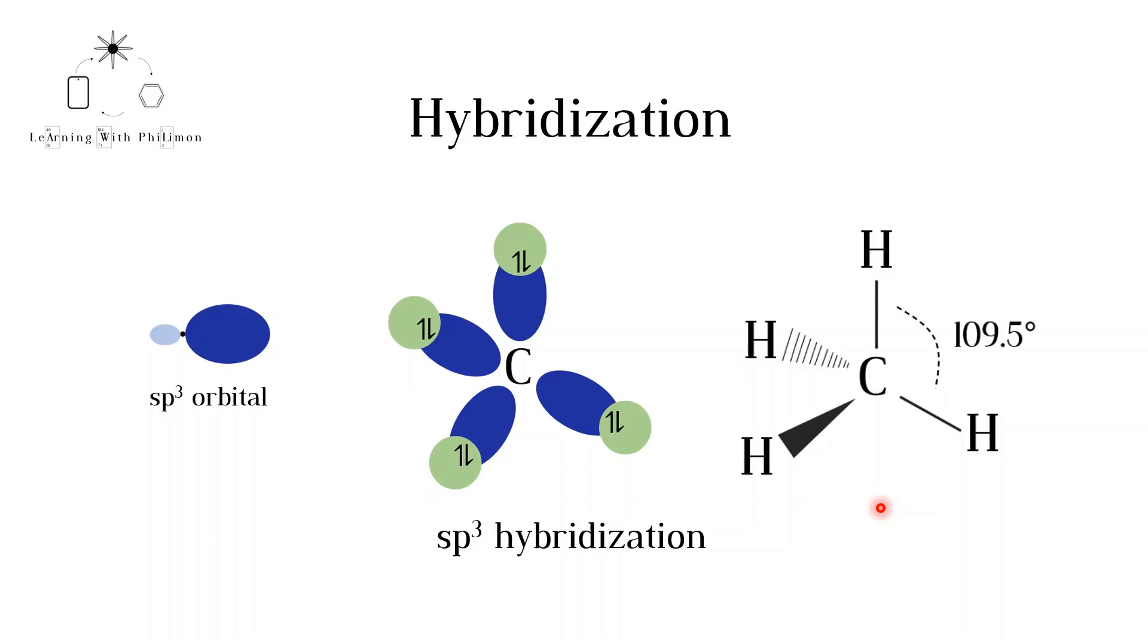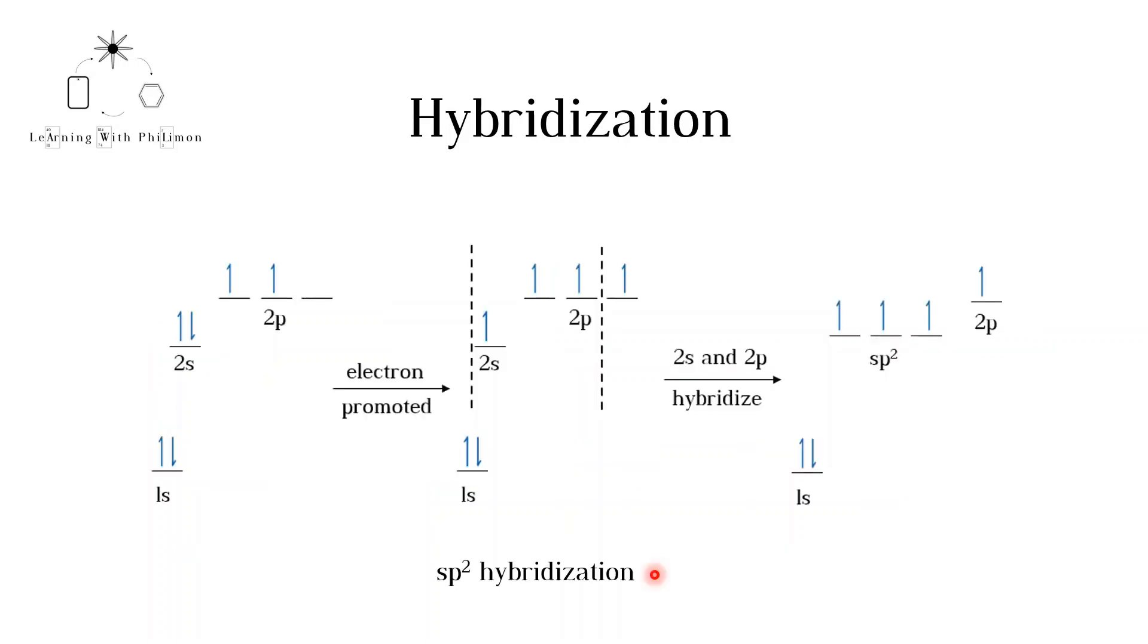There are also other types of hybridization. In sp2 hybridization, an electron is promoted from the 2s orbital to the 2p orbital, as before. However this time, the 2s and only two 2p orbitals hybridize. Three equivalent hybrid orbitals are formed, called sp2.